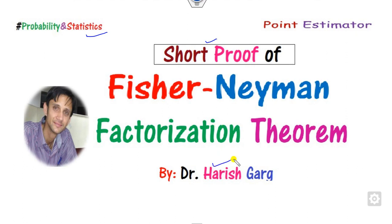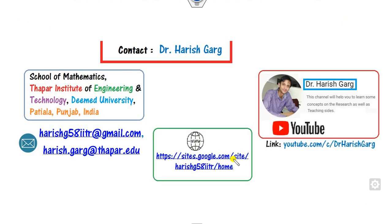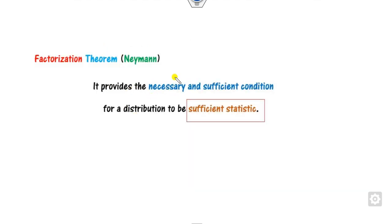Myself, Dr. Gur, working in the School of Mathematics, Thapar Institute, India. First of all, what is this factorization theorem and why is it so important? Because it will provide you the necessary and the sufficient condition for any distribution to be said to be a sufficient statistic.